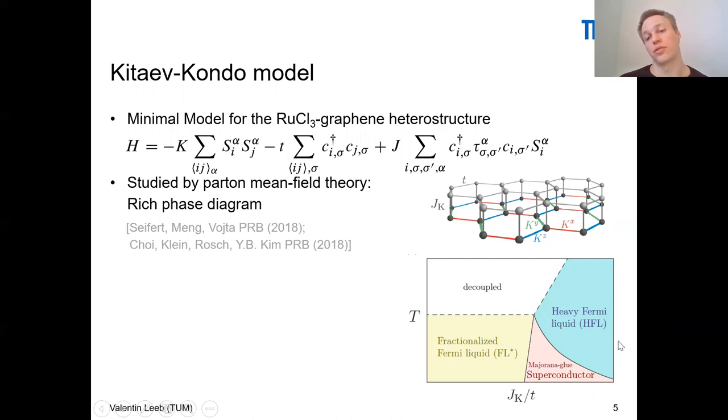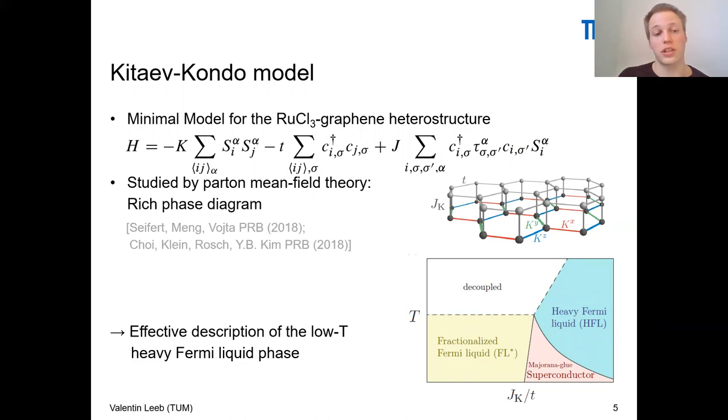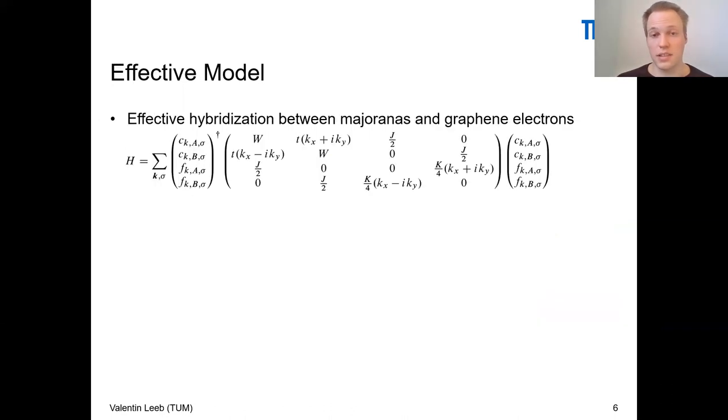What we're looking for in the following is an effective low energy or low temperature description of the heavy Fermi liquid phase. If you do this parton mean field theory, what's really practical is that in this heavy Fermi liquid phase, the symmetries of the mean fields are very simple. So it's quite easy to compute an effective Hamiltonian or effective description for the heavy Fermi liquid phase. It will just result in a simple four band Hamiltonian which we can analyze.